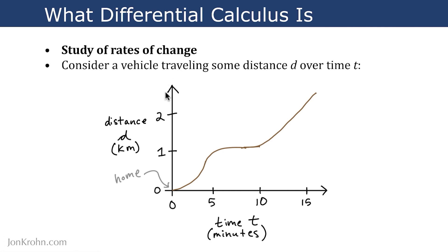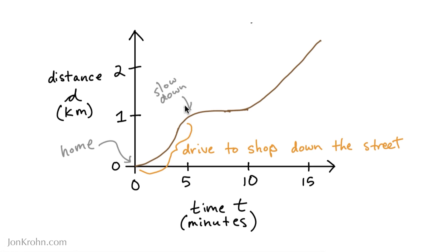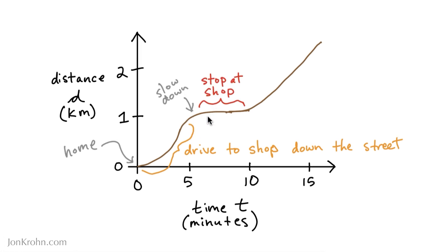Let's look at an example where we are considering a vehicle traveling some distance d, say in kilometers, over time t, say in minutes. You're starting here at home, not having traveled any distance at that zero time point. At around the five-minute mark, you begin to slow down and you stop at the shop down the street from you.